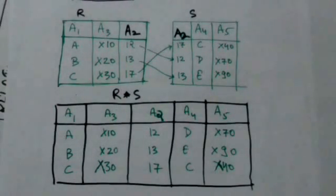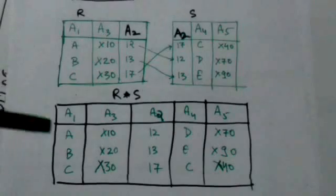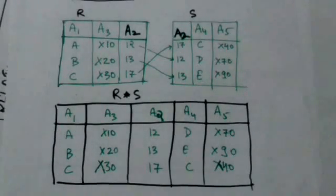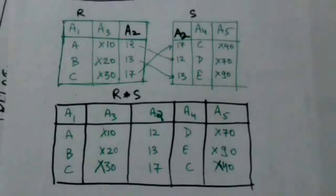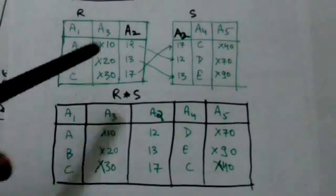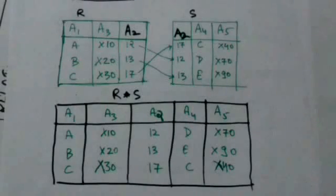You can see attribute A2 appears only once in tuples of resulting relation, though it appears in both relations R and S, because duplicate attributes are removed. Thank you very much.